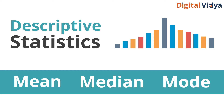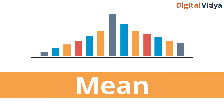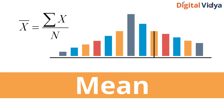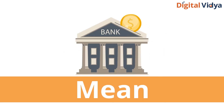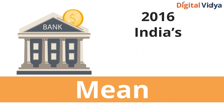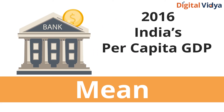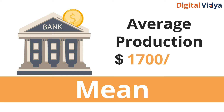The first one is mean. Mean is simply the average of all data points, found by summing up all samples and dividing by the number of samples. Mean is universally used for various purposes such as calculating the per capita GDP of a country. According to the World Bank, in 2016 India's per capita GDP was 1852 US dollars, which shows that an average Indian produces goods worth around 1700 US dollars every year.